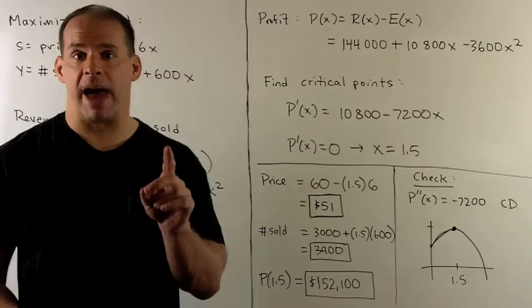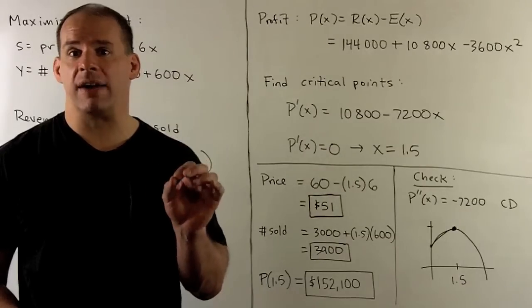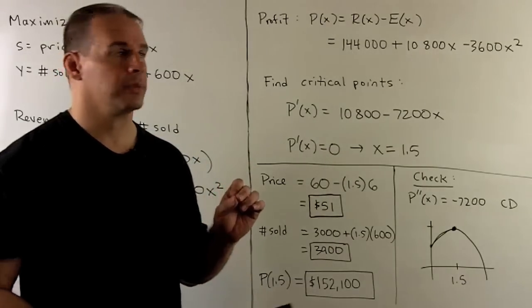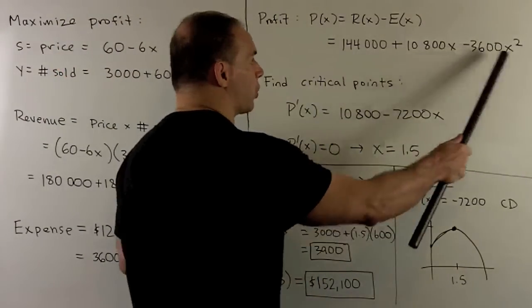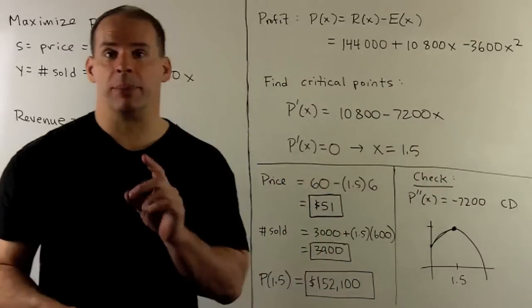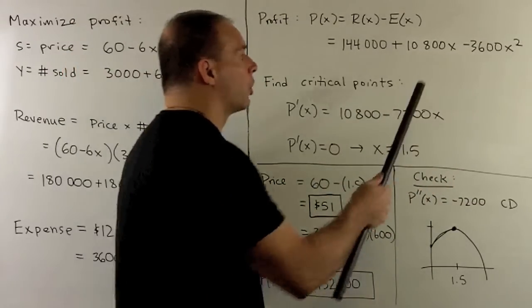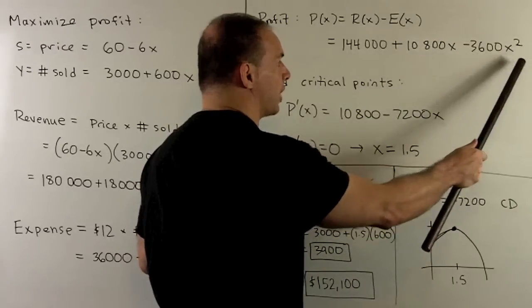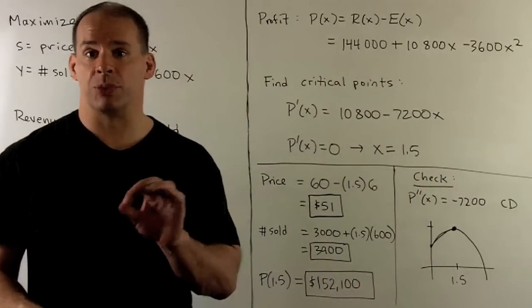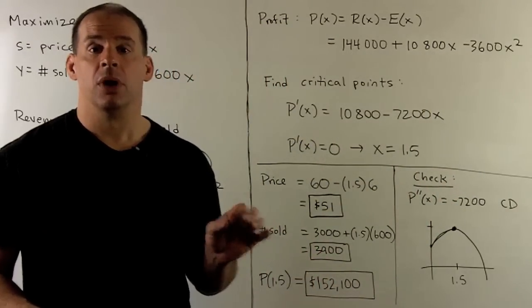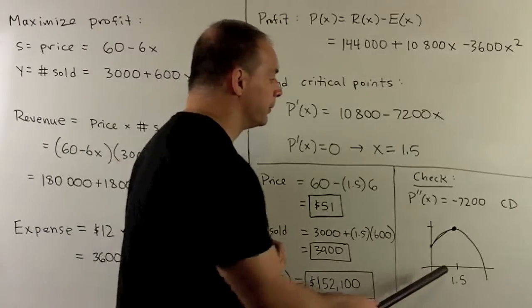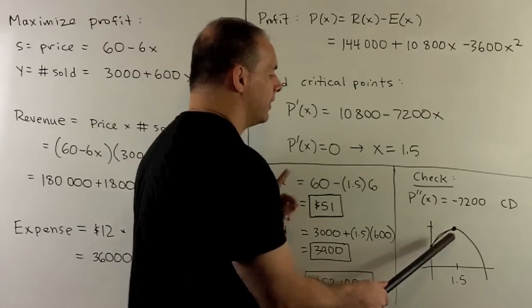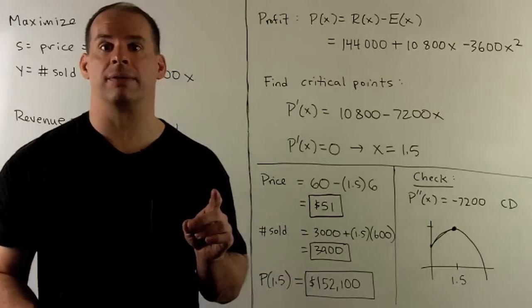Finally, to make sure I have a maximum, I just sketch the graph of our profit function. Notice this is a quadratic, so the graph is going to be a parabola. The coefficient of X squared is minus 3,600, which is negative, so this parabola is facing down. We know where the critical point is, so that's going to verify that we have a maximum at X equal to one-half.